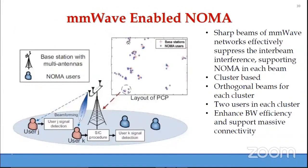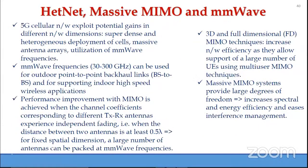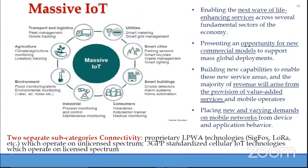We can also combine the benefits of both NOMA and millimeter wave — millimeter-wave-enabled NOMA. Coming to massive IoT, there are several typical applications: transport and logistics, agriculture, environment, utilities, smart cities, smart buildings, consumers, and industrial process monitoring.